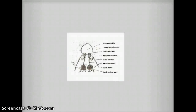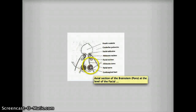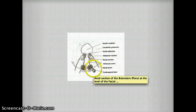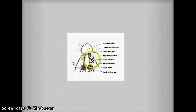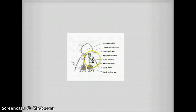Looking at a simpler version of the same picture: this is the corticospinal tract, and you can see this is the abducens nucleus with the tract running like that. The facial nucleus is very close to the abducens nucleus, but it is lateral to the abducens nucleus.